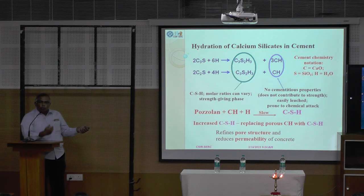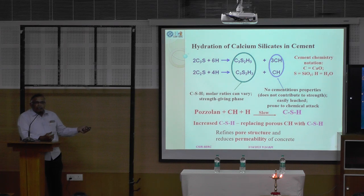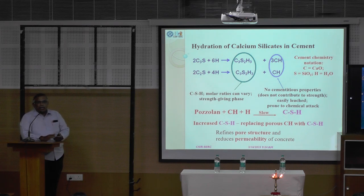Then we can get more C-S-H, more calcium silicate hydrates. How does it happen? When you are adding C-H with some pozzolana, that is what the cement is called Portland pozzolana cement. I happened to be in Italy, where the natural cement occurs — that place Pozzuoli. I visited the place and found that natural cement.